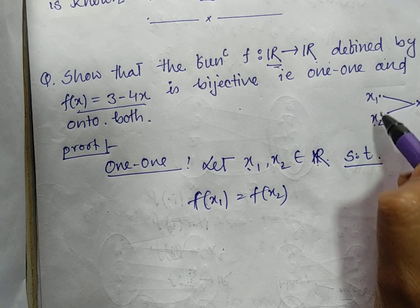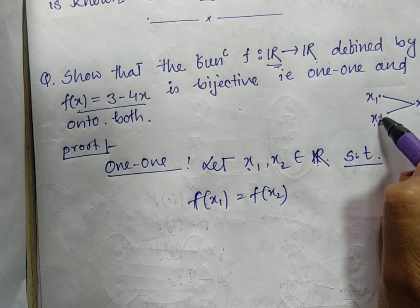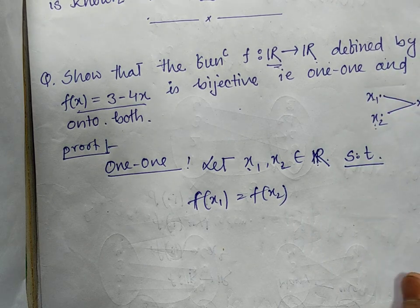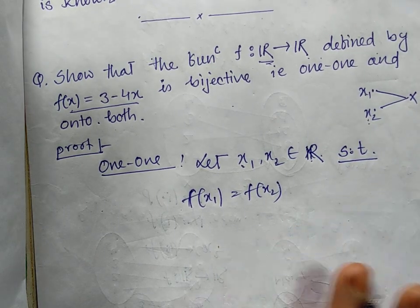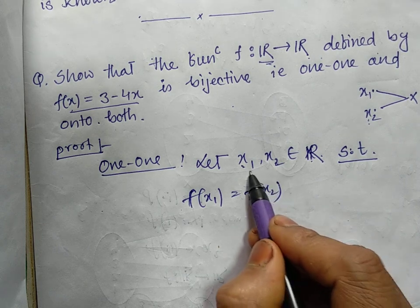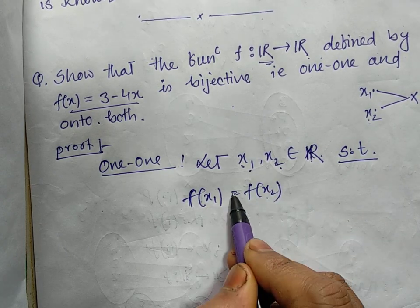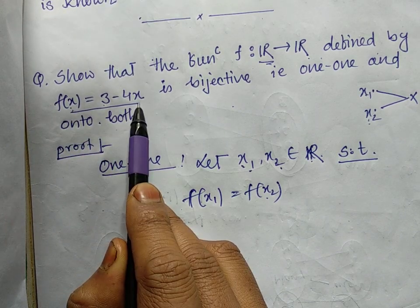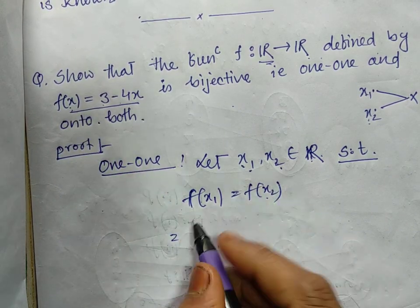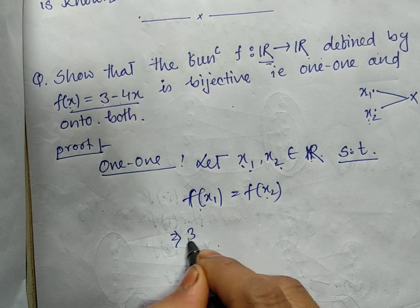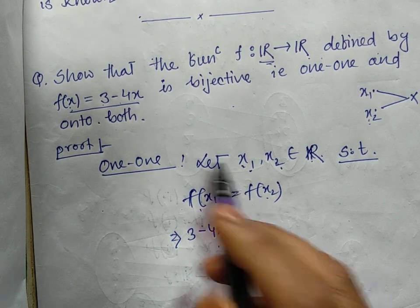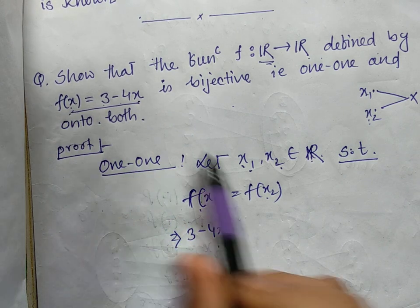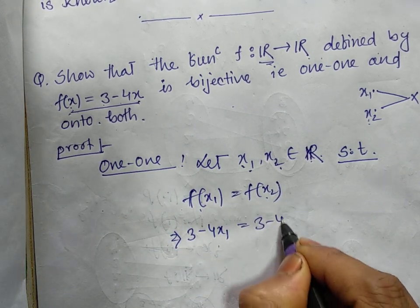Such that f(x₁) = f(x₂). We consider two elements so that their images are equal. By definition, what is f(x)? f(x) = 3 - 4x. Then f(x₁) will be 3 - 4x₁. Wherever x is there, in place of x we write x₁.